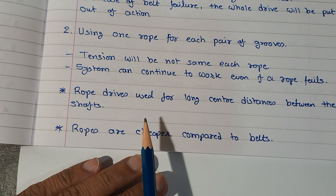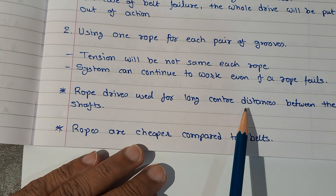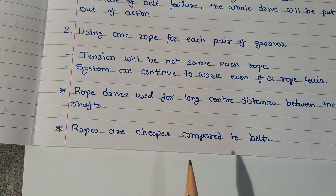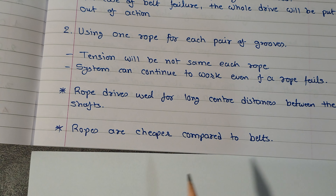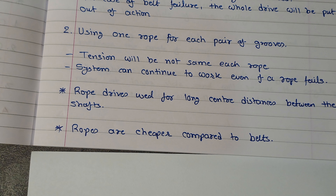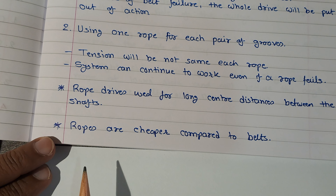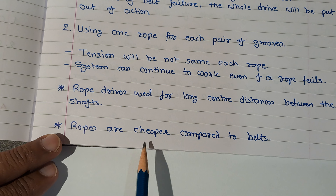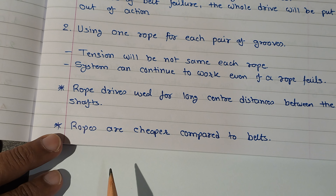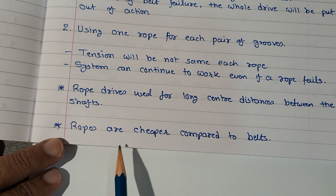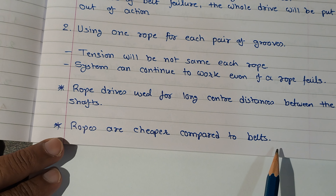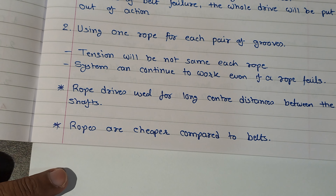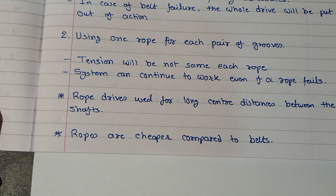Rope drives are used for long center distances between shafts — generally when the distance is in terms of meters, more than 10 meters, rope drive is preferred, as witnessed with its use in lifts. Another important point is that rope drives are cheaper compared to belts; their manufacturing as well as maintenance cost is comparatively less than belt drives.